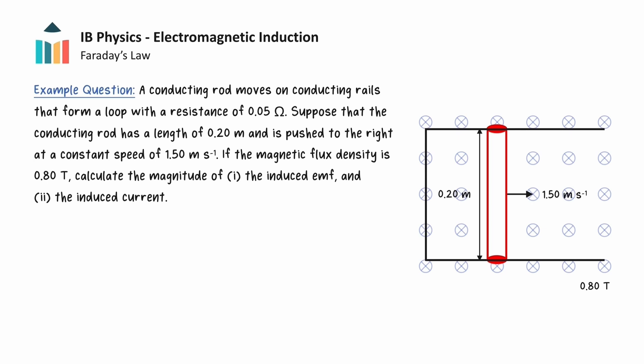Let's apply this understanding to an example question. A conducting rod moves on conducting rails that form a loop with a resistance of 0.05 ohms. The conducting rod has a length of 0.2 metres and is pushed to the right at a constant speed of 1.5 metres per second. If the magnetic flux density is 0.8 tesla, calculate the magnitude of the induced EMF and the induced current.